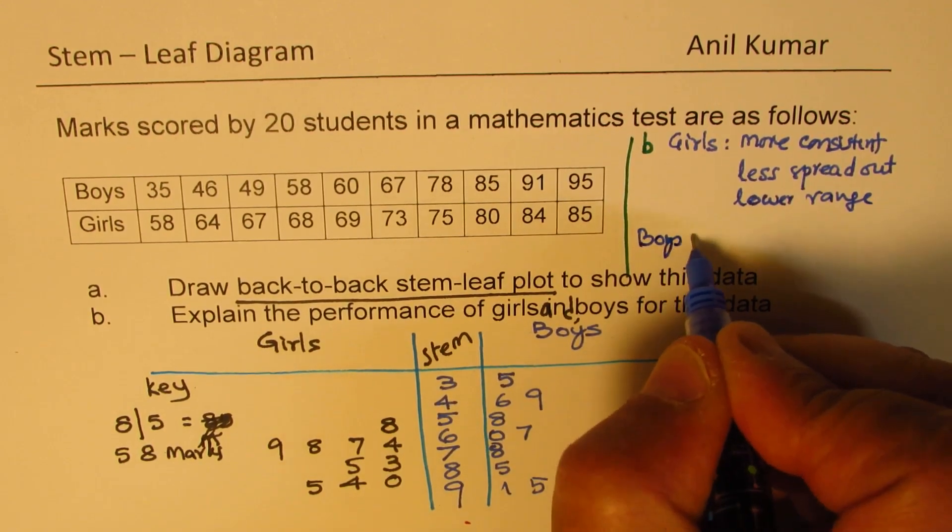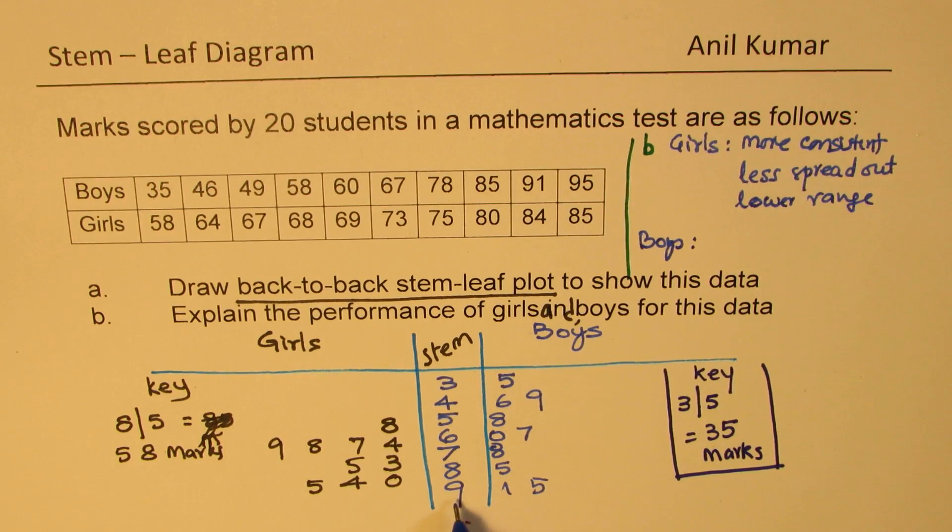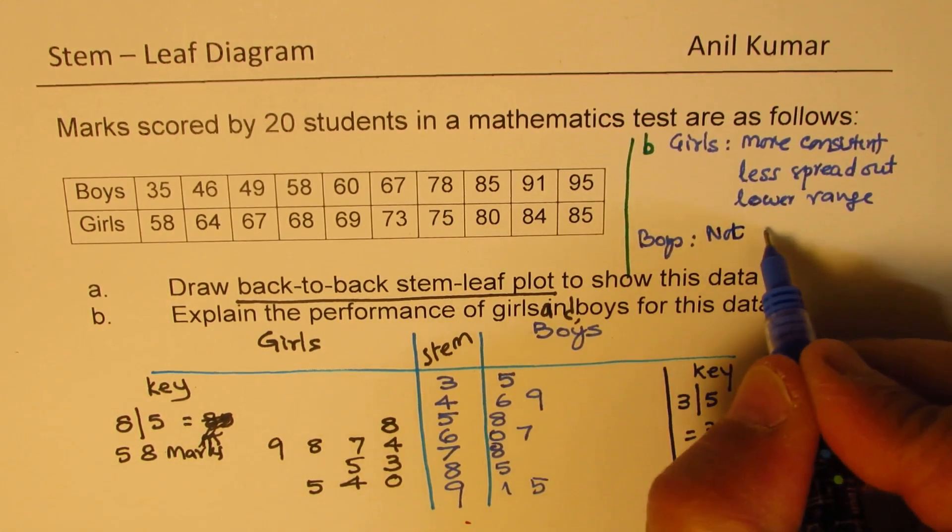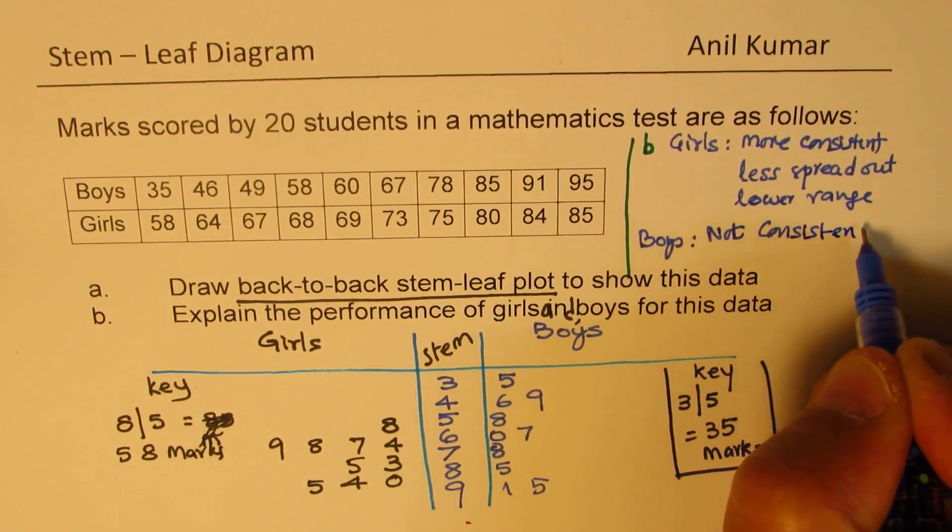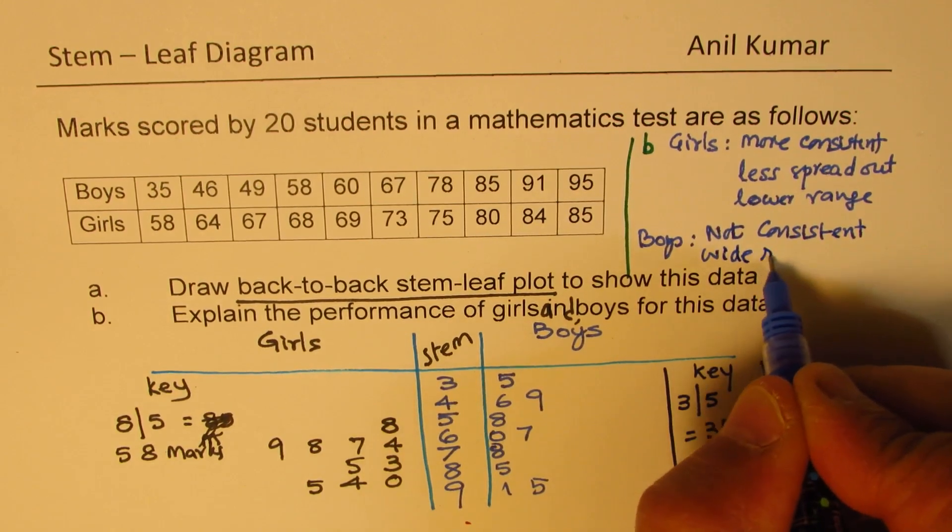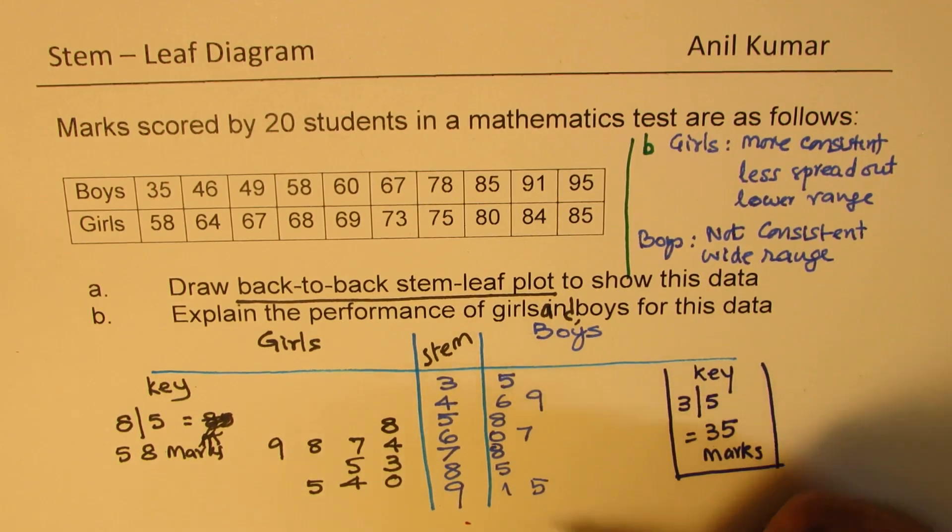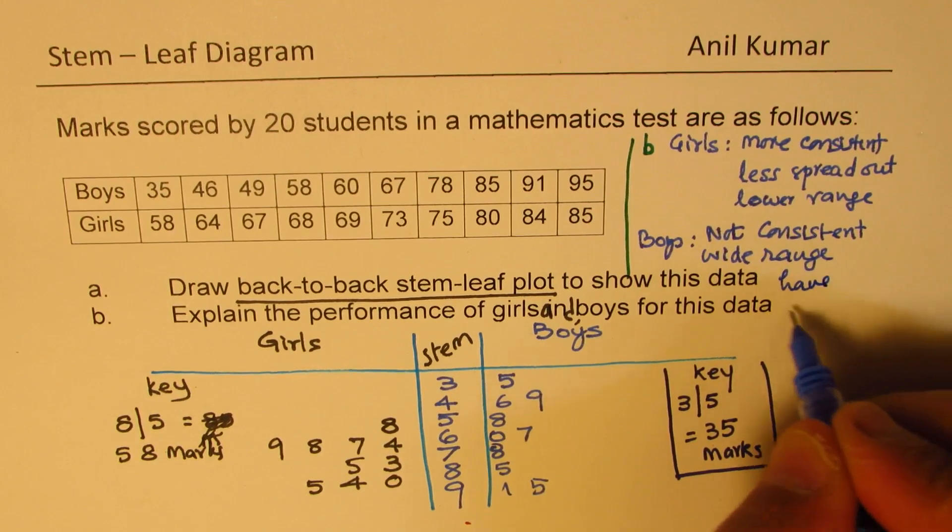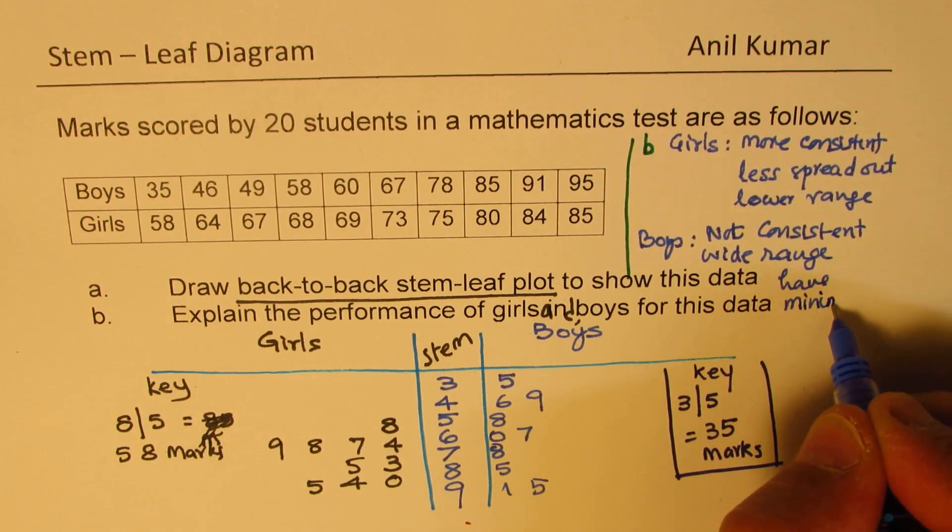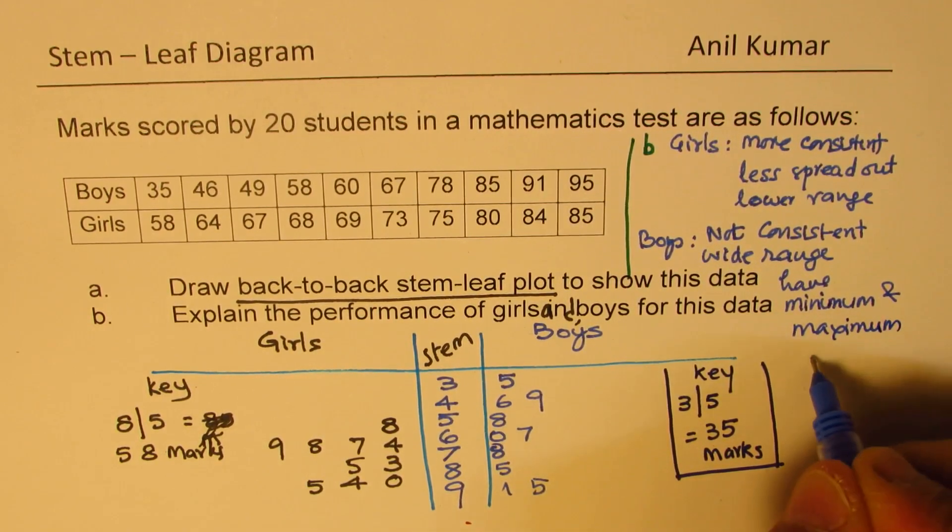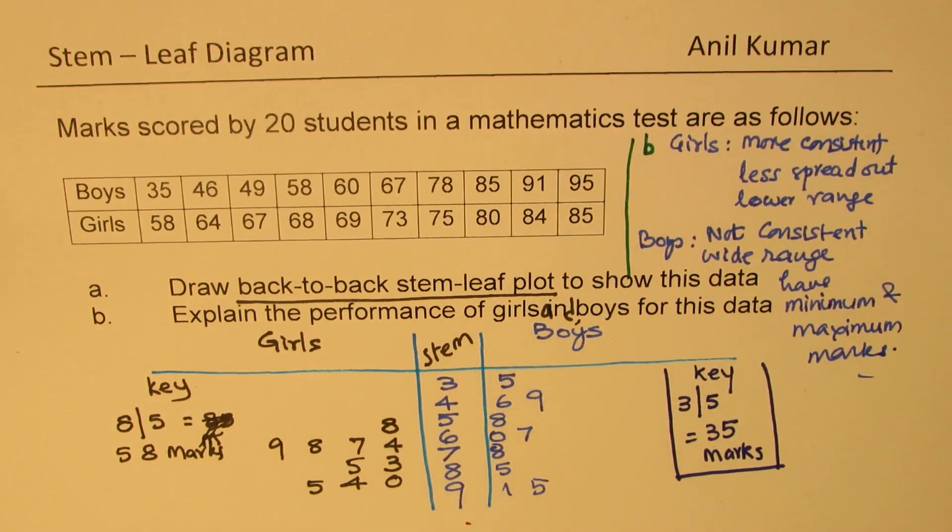As far as the boys' data is concerned, some boys really scored very high marks, like 91 and 95. However, you see it is not very consistent. Wide range. So you also see that boys have scored minimum as well as maximum marks. So these are a few points which can help you explain the data provided. Perfect.